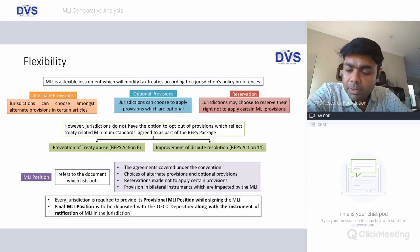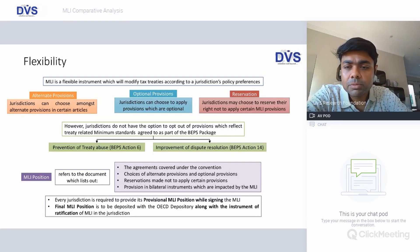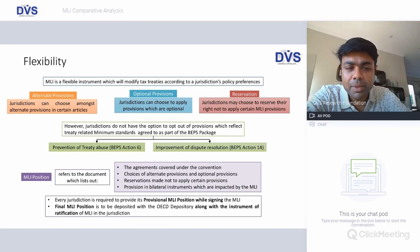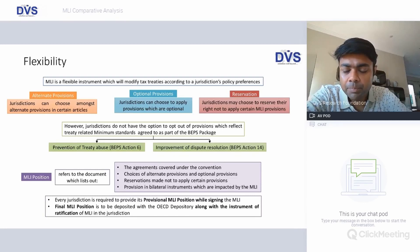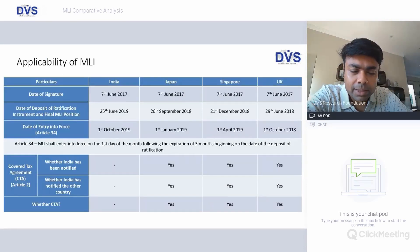What are the flexibilities MLI offers? MLI suggests alternate provisions, optional provisions, and areas where countries have an option to not apply MLI provisions. However, when it comes to prevention of treaty abuse and improvement of dispute resolution, MLI provisions are mandatory — these are the minimum standards. For the remaining five categories, such as hybrid mismatches or arbitration, all provisions are only recommended in nature.